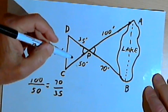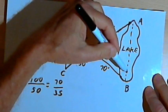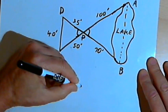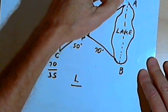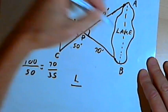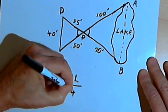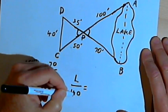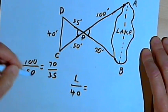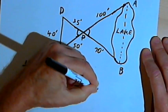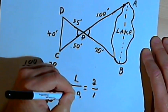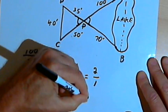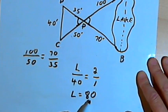Let's use that fact to figure out what the distance is from A to B. We'll call that L for lake. The corresponding distance for L would be 40, the corresponding side of the other triangle. So L over 40 equals the ratio for the other sides, which is 2 over 1. If I multiply both sides of this equation by 40, I get L equals 80. So the length of the lake is 80 feet.